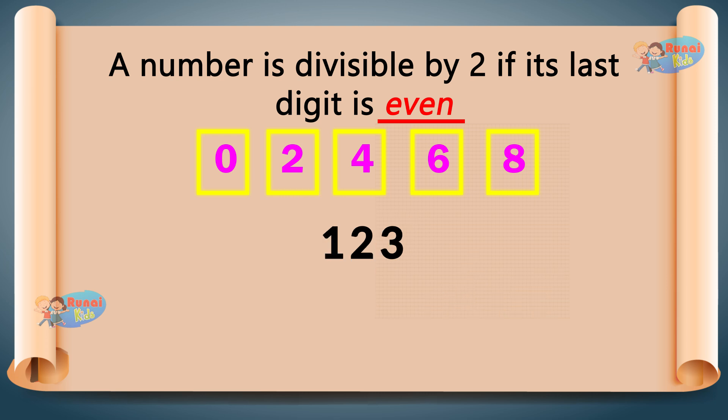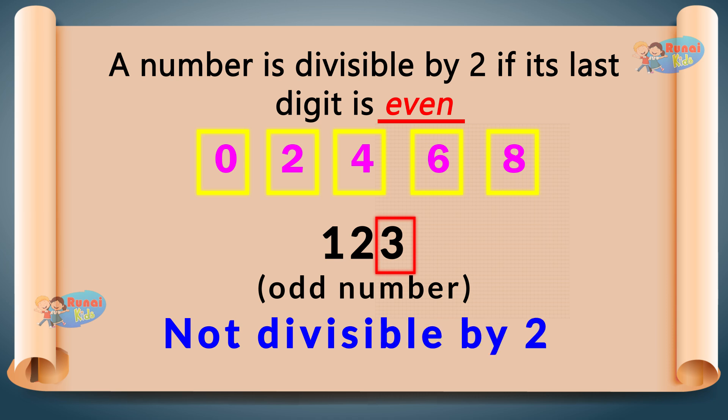123 — last digit is 3, not an even number. So 123 is not divisible by 2.